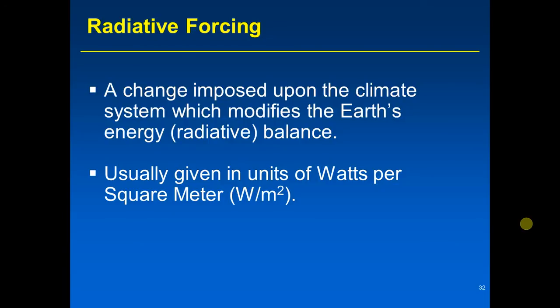Radiative forcing is usually given in units of watts per square meter — power per area. When we talk about energy at home, you'll be seeing these units more. For example, incandescent light bulbs could have wattages of 40, 60, or 100 watts. Meters squared is a unit of area, so watts per square meter is power per area. Power is energy per time, so you're looking at the energy coming in per time per area — that is what these energy budget diagram numbers represent.